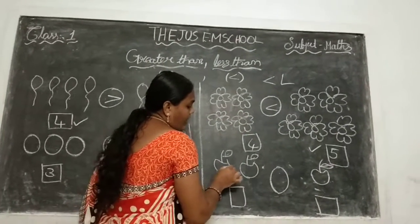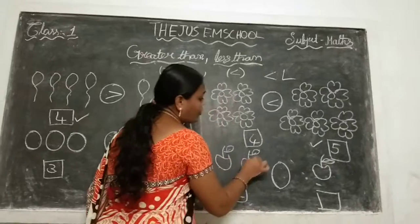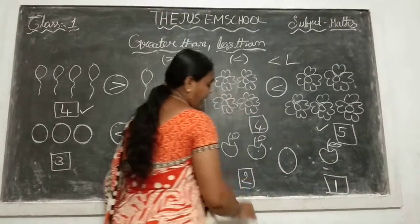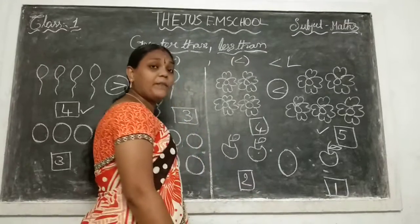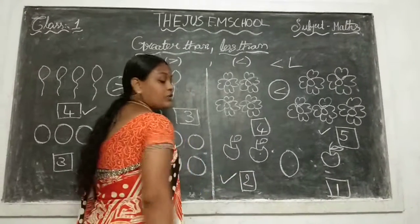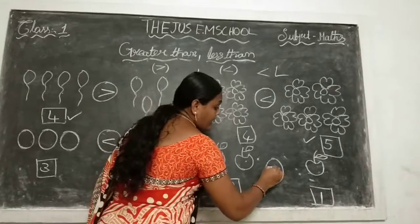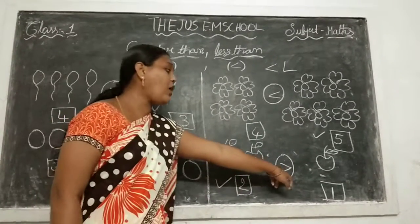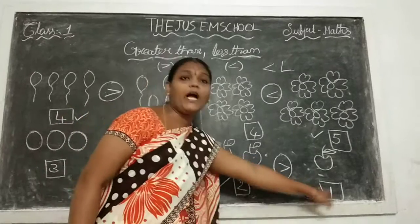Next one: 1, 2. How many apples are here? 2. And 1 on the other side. We compare 2 and 1. Which is the big number? 2. So the mouth is open to the big number side. This one is called greater than. 2 is greater than 1.